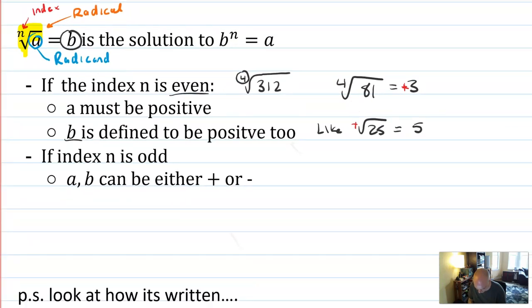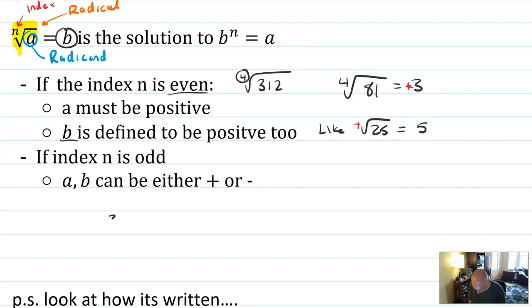On the other hand, if the index is odd, so we're doing like a cube root or a seventh root, you can 100% do the seventh root, the cube root of negative something. You can do the cube root of negative 27. What will you get? Well, it'll be all the solutions to the equation x cubed equals negative 27. There are solutions to that. The solution is negative 3.